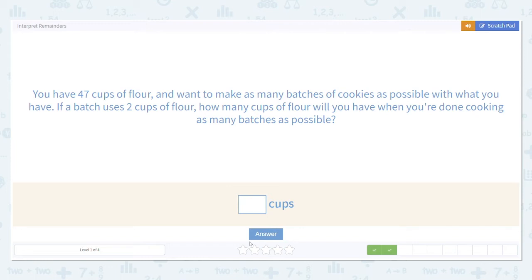So what we want to do is figure out once you make as many two cup batches as possible, what's left? This is the same as dividing by two. So we take 47 total cups, divide by two cups per batch,